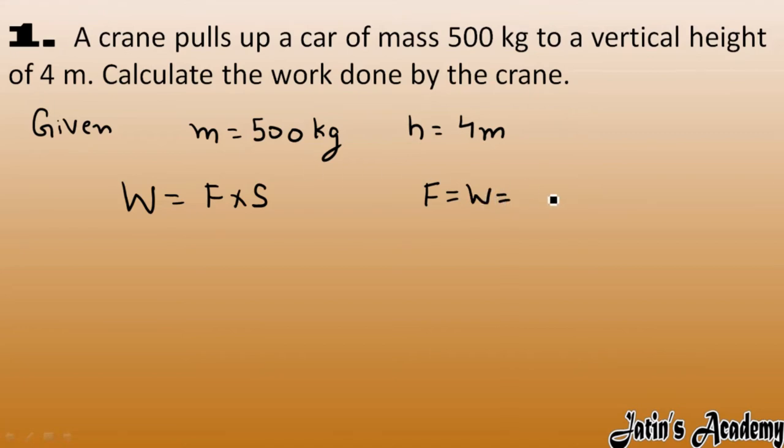So weight of body in this case is m into g. Mass we have 500 kg and gravity, if it is not given, then we have to take 9.8. If 10 is given, then we will take the 10 value. From this we got 4900 newton.